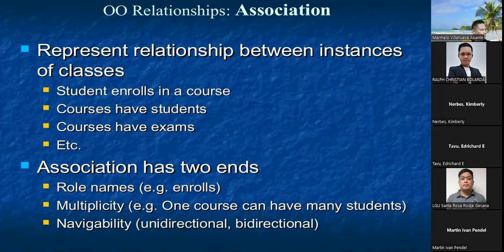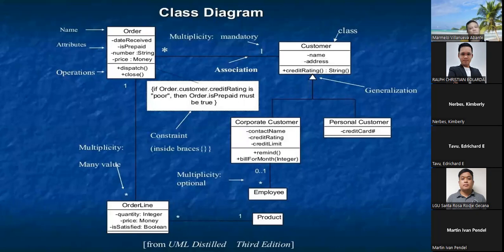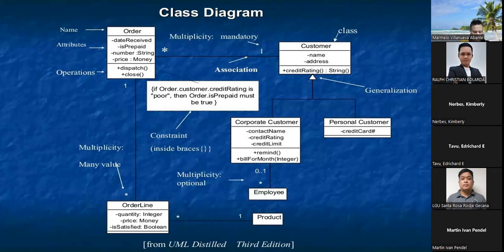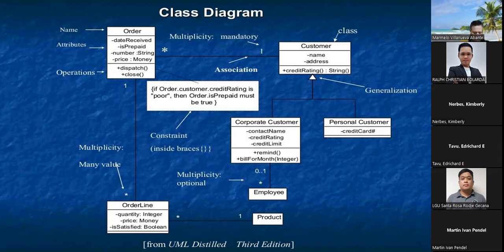An association has two ends: role names and multiplicity. Multiplicity — one course can have many students, so one-to-many. Here is the example: in the class diagram, the name, attributes, and operations are shown at the class level. The association between customer and corporate customer includes constraints. Multiplicity is shown — for example, an employee and a product with an online order line indicating values for order capacity.